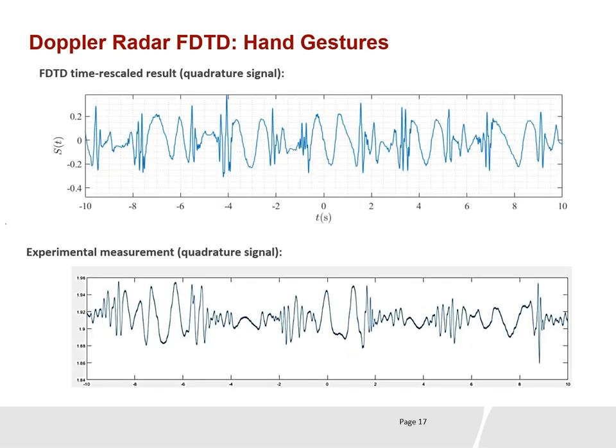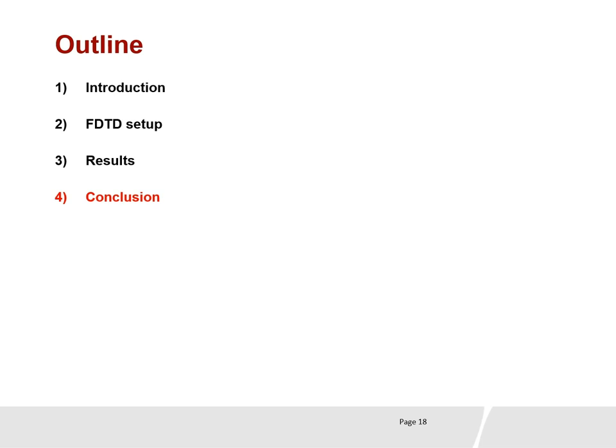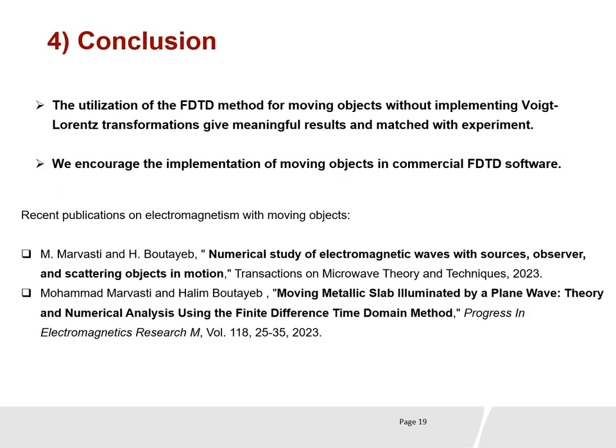Also, this is the result of the quadrature signal. In conclusion, the utilization of the FDTD method for moving observers and objects without implementing the Voigt-Lorentz transformation gives meaningful results and matches with experiment. We encourage the implementation of moving objects in commercial FDTD software. These are some of our recent publications in this domain. Thank you very much.